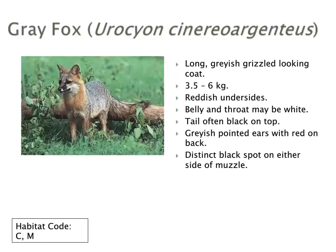The gray fox is usually a little bit smaller, with a longer grizzled-looking coat and reddish undersides, as opposed to white — though the belly and throat might be white. The tail is often black on top and there is a distinct black spot on either side of the muzzle. If you look carefully at the muzzle or snout of the animal in the image, you'll see that characteristic black spot.